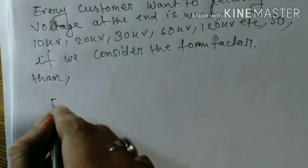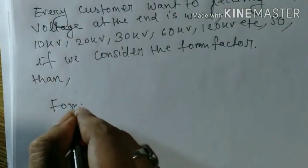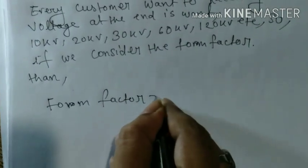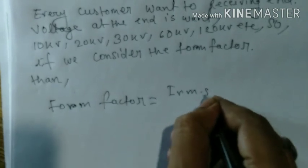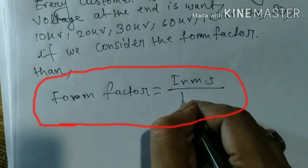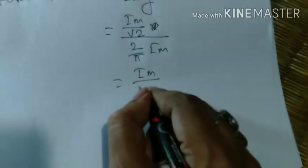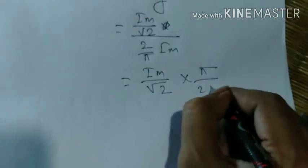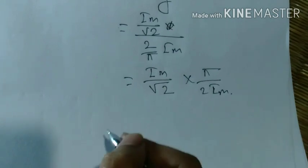We know that the form factor equals the RMS value, or I_RMS by I_average. We know that I_RMS equals I_m divided by root 2, and I_average equals 2 by pi times I_m. From that we can get 1.11.